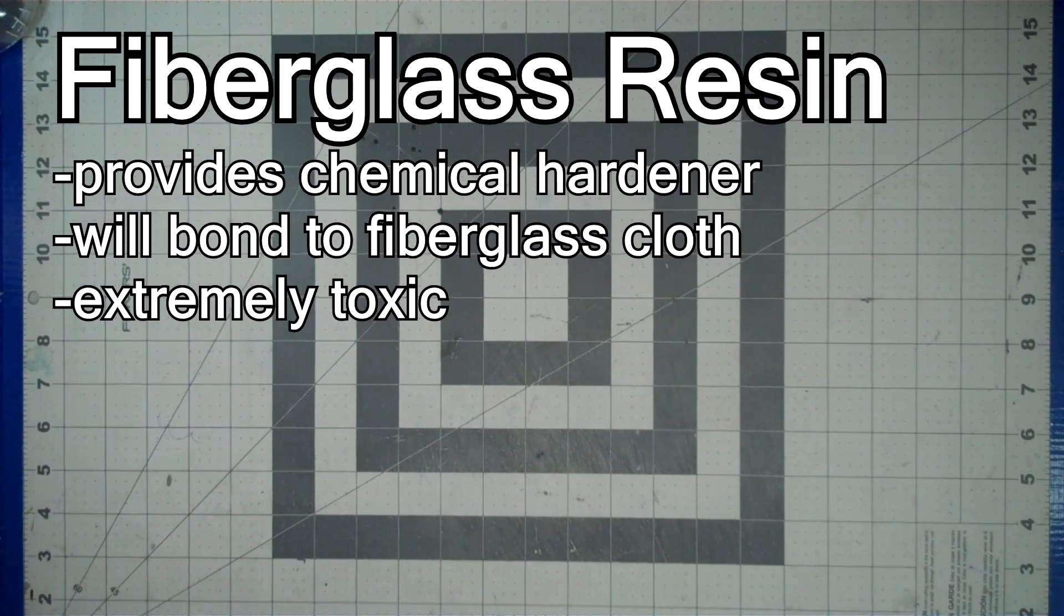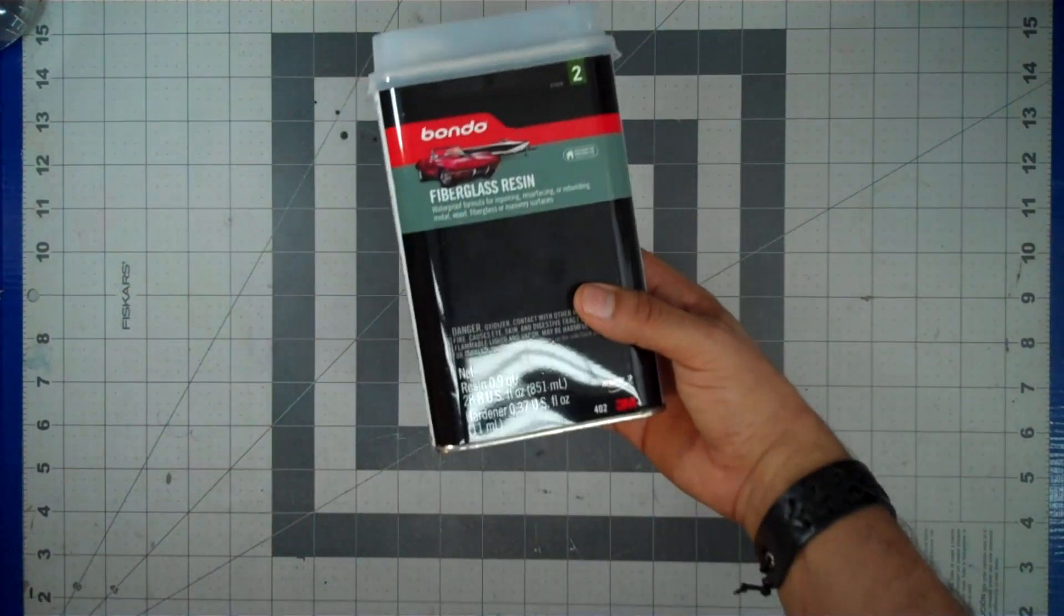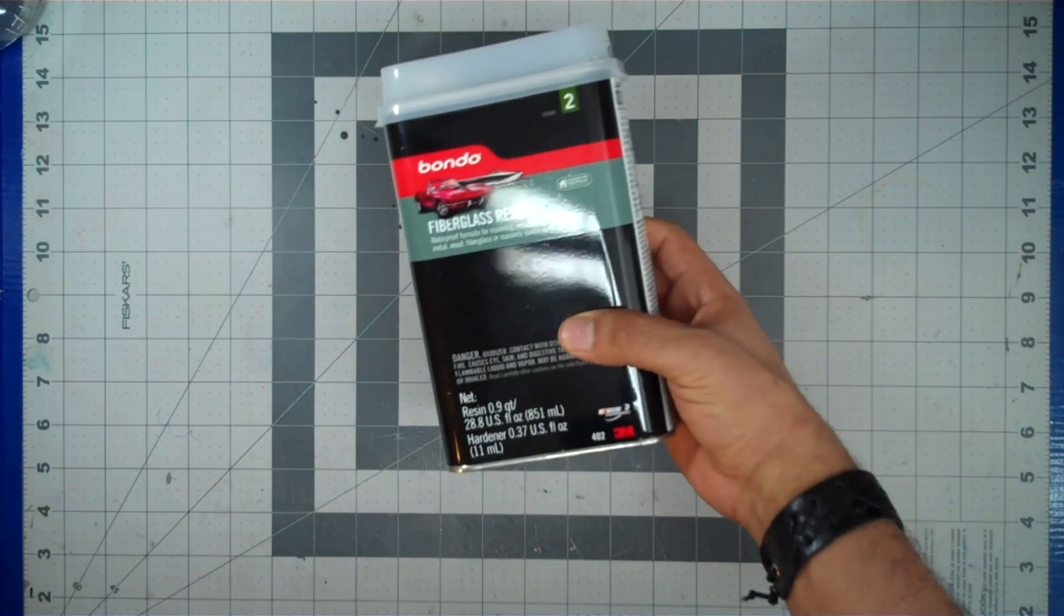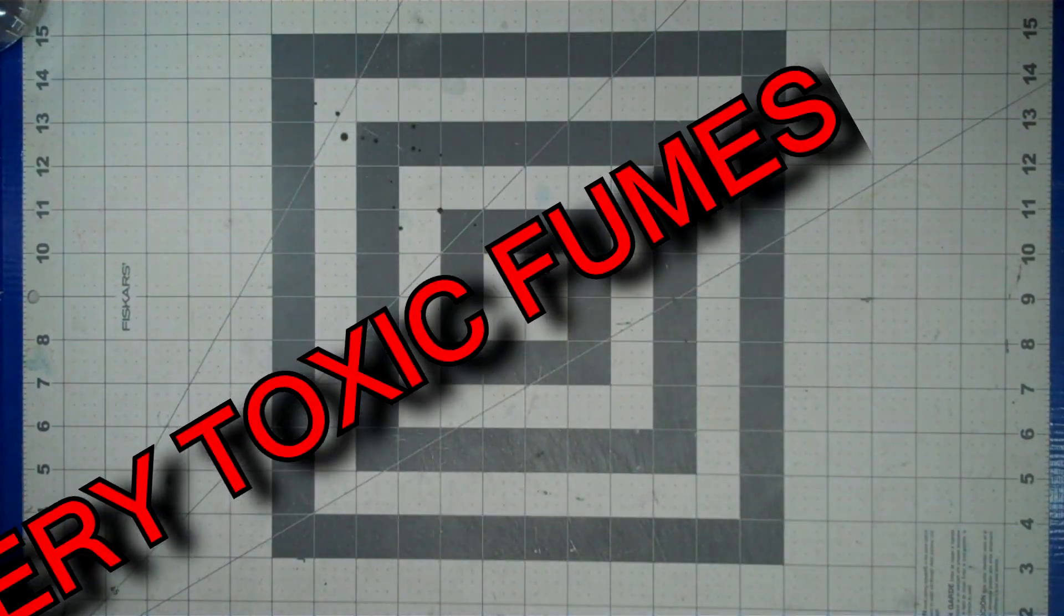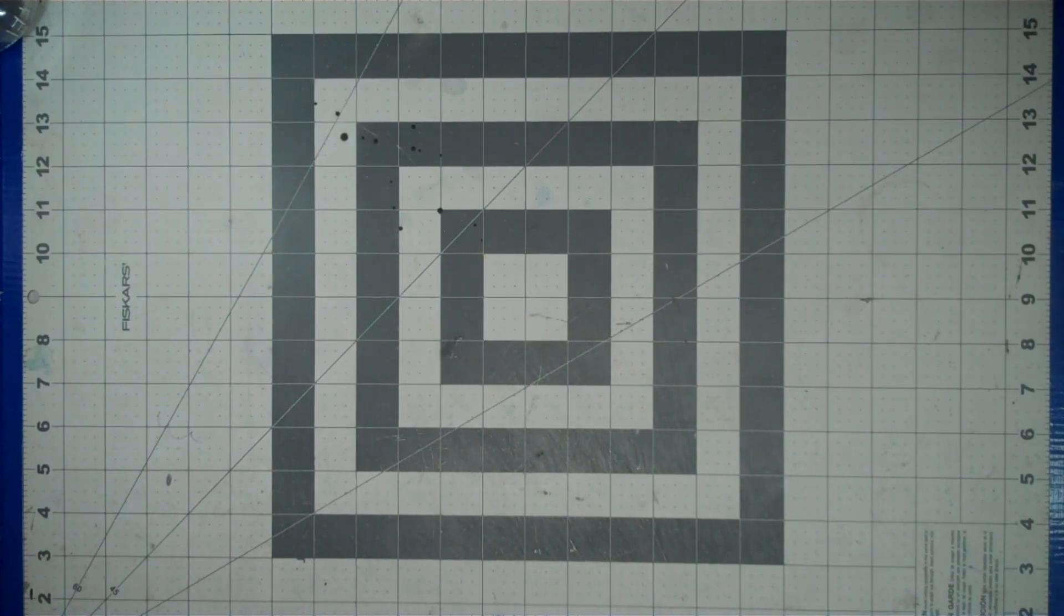A fiberglass resin is the other half of the hardening equation, being used to soak the fiberglass cloth and provide the actual hardening agent necessary to solidify the parts. Now do keep in mind, the fumes from this are extremely toxic, so make sure not to breathe them in.